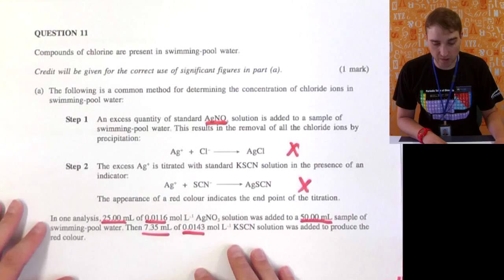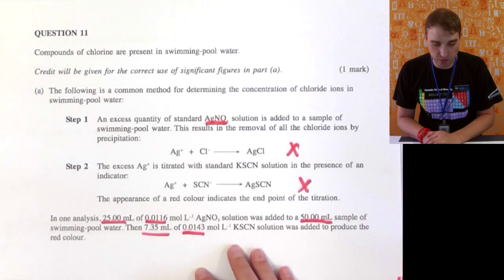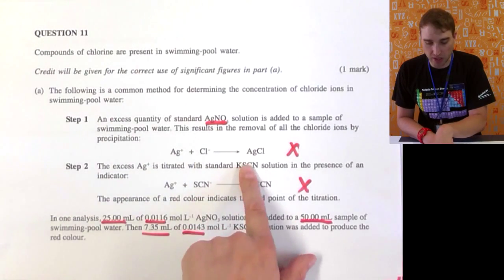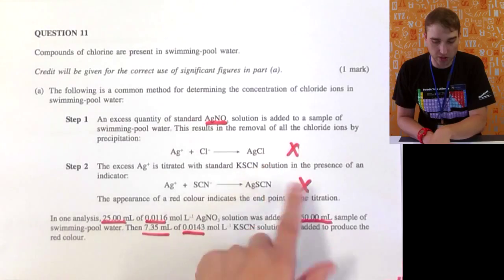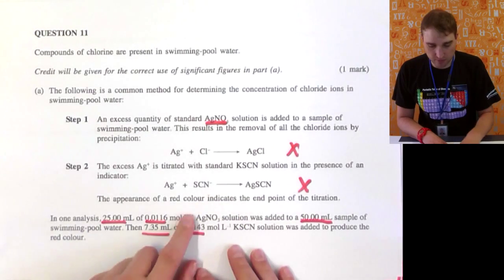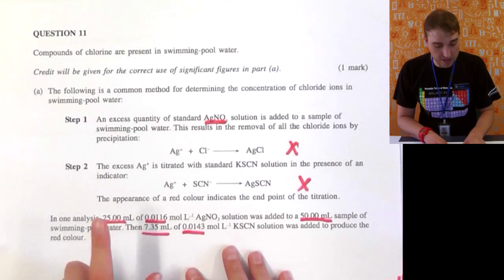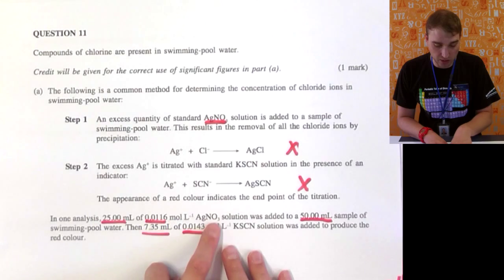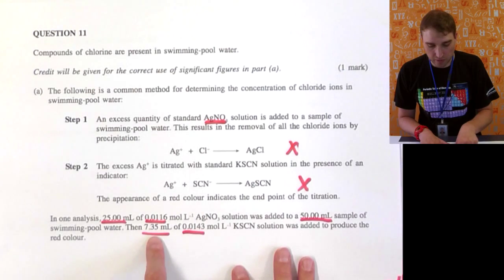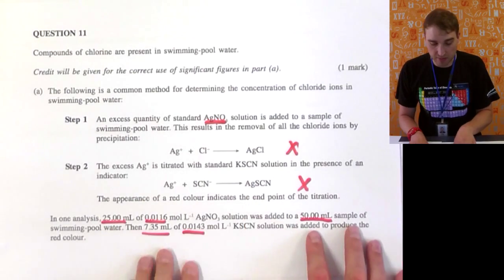This whole section we're looking at is Part A. An excess quantity of standard silver nitrate solution was added to a sample of swimming pool water, resulting in removal of all the chloride ions by precipitation. I've highlighted the silver nitrate we're starting with and the equation we need. An excess of silver is then titrated against KSCN solution, and a red colour indicates the end point. Our key numbers: 25 mL of 0.0116 molar silver nitrate solution added to a 50 mL sample, and 7.35 mL of 0.0143 mol KSCN solution used to produce the red colour.